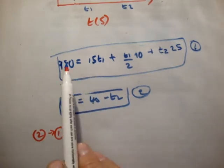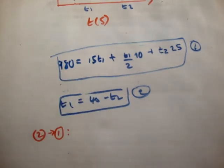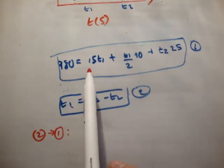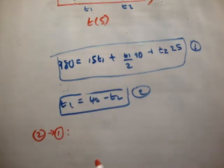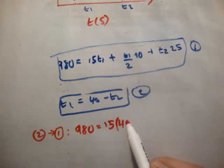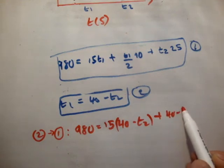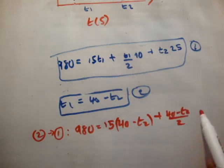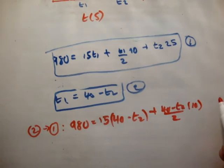So by plugging this in here, this equation becomes of one variable, and we can solve it. Or, like I said, here are two separate equations. You can solve those simultaneously, and that'll work too. I think this is easier, however. So we'll say 980 is equal to 15 times 40 minus T2 plus 40 minus T2 over 2 times 10 plus 25T2.